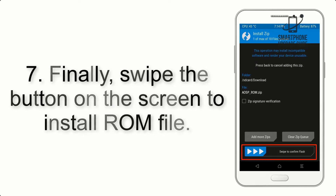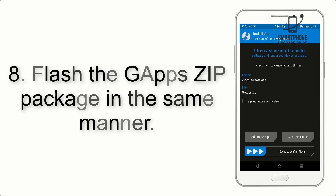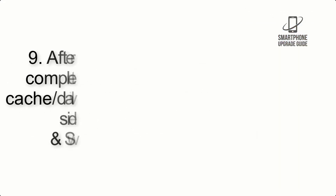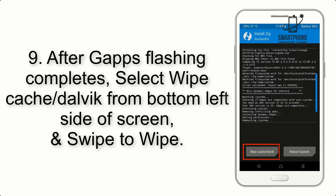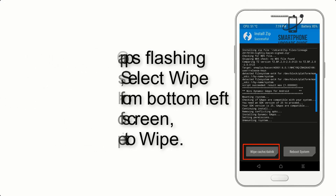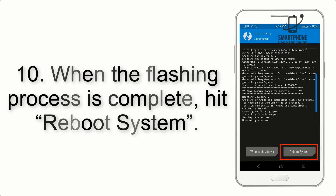Step 8: Flash the GApps zip package in the same manner. Step 9: After GApps flashing completes, select Wipe Cache and Dalvik from the bottom left side of the screen and swipe to wipe. Step 10: When the flashing process is complete, hit Reboot System.